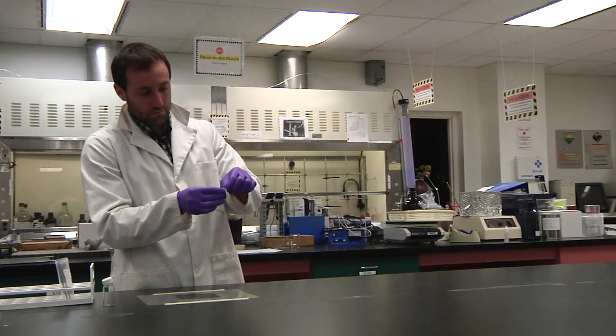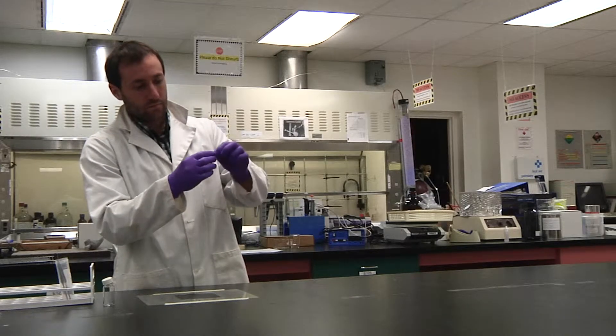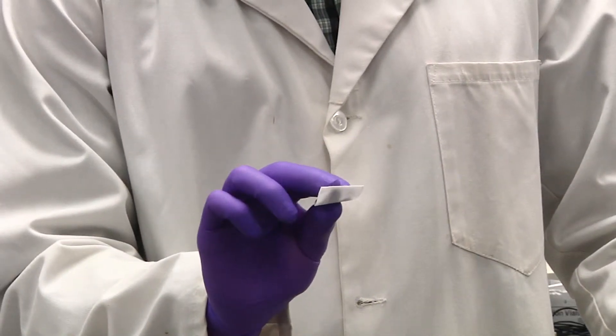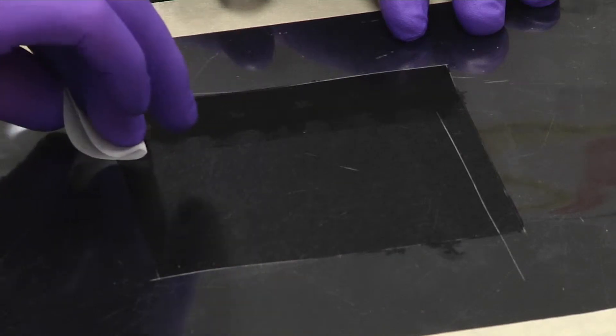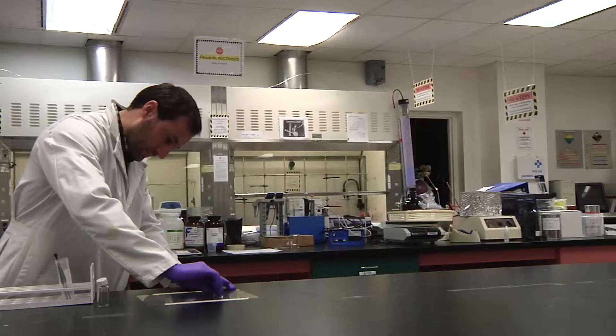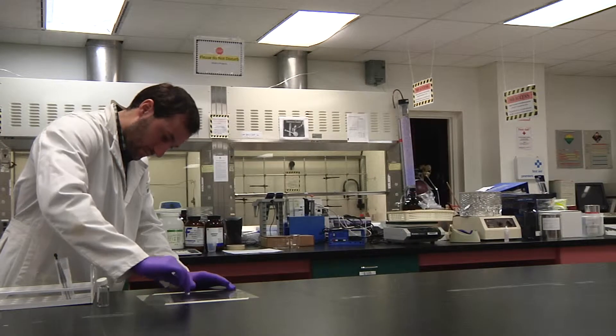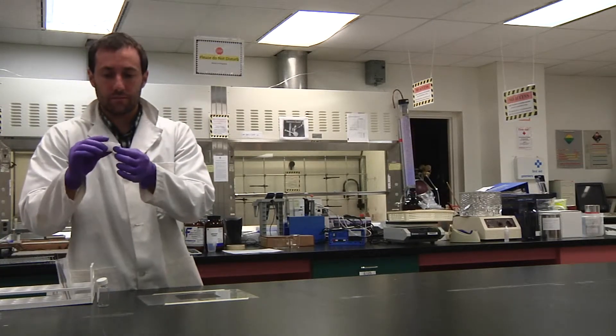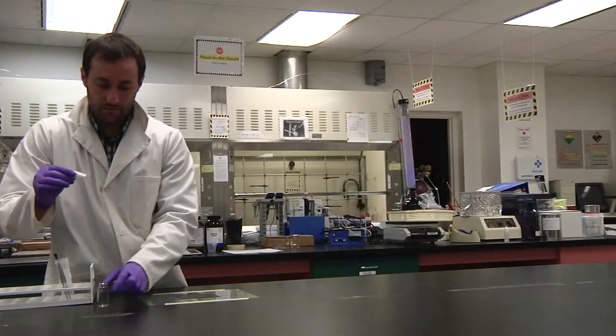Then carefully fold the wipe so that the wiped area is on the inside. Try to minimize touching the wiped area. Wipe the surface again, this time going from left to right, progressing from bottom to top. Finish with one last wipe down the right side of the template, picking up any residual solvent from the left to right wiping.